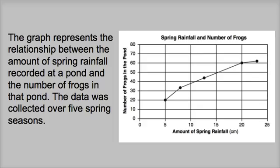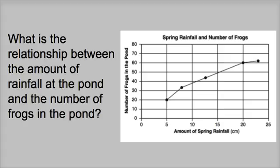Here's the example we've been looking at. The graph represents the relationship between the amount of spring rainfall recorded at a pond and the number of frogs in that pond. The data was collected over five spring seasons. Here's the question we had to answer: What is the relationship between the amount of rainfall at the pond and the number of frogs in the pond?